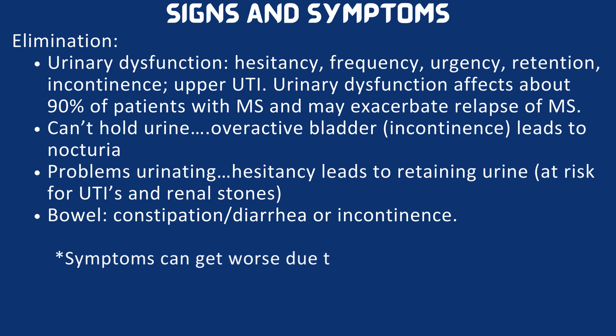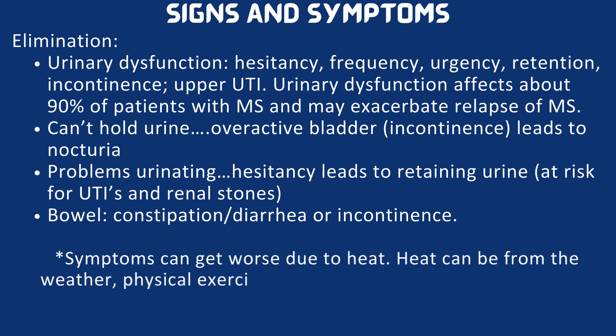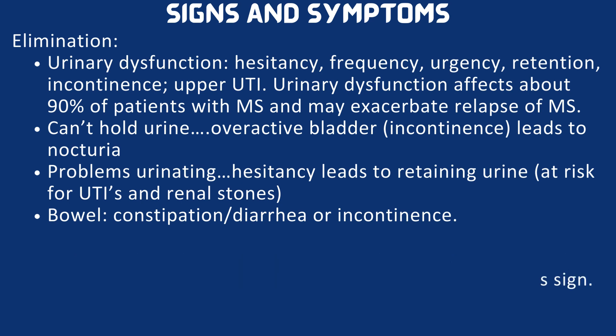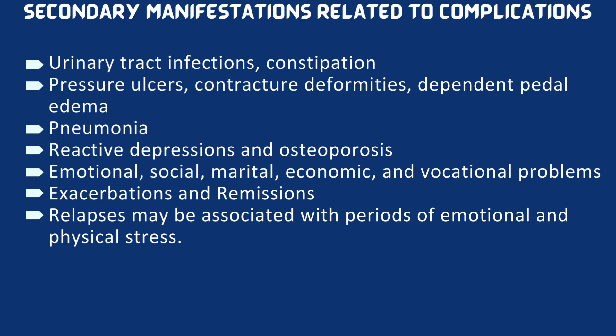Symptoms can get worse due to heat, whether from the weather or physical exercise — this is called Uhthoff's sign. Secondary manifestations related to complications include urinary tract infections, constipation, pressure ulcers, contracture deformities, dependent edema, pneumonia, reactive depression, osteoporosis, and emotional, social, marital, economic, and vocational problems. Relapses may be associated with periods of emotional and physical stress.